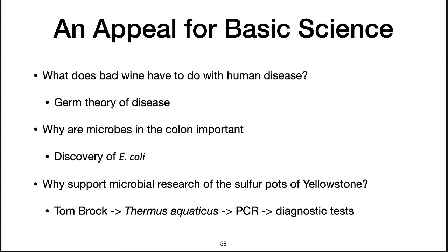I would like to end with an appeal for science. If you look at some of the discoveries we have talked about, at first they seem esoteric. What does bad wine have to do with human disease? It fostered the germ theory of disease. Why are microbes in the colon important? That led to the discovery of Escherichia coli, and research on this organism has been instrumental in understanding the basis of life. Why support microbial research in the sulfur pots of Yellowstone? This dude is just trying to get a free vacation! Well, Tom Brock went there, discovered Thermus aquaticus, and Thermus aquaticus has a heat-stable enzyme used in PCR, which is used for diagnostic tests. The point is: funding basic, fundamental research is very important. Okay, that's it for Module 1.